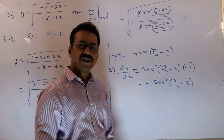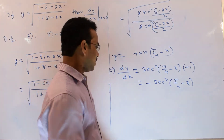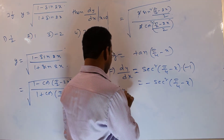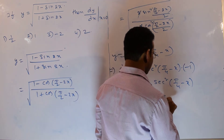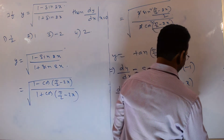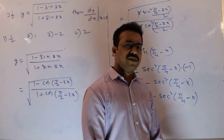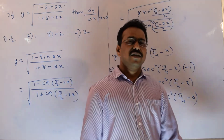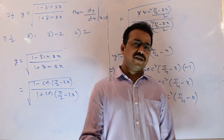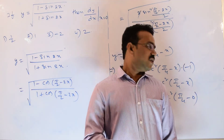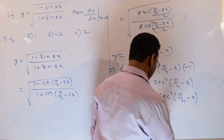We need to calculate the derivative at x equals 0 as per the given problem. Substituting x equals 0: dy/dx equals minus sec²(π/4 minus 0) equals minus sec²(π/4). Secant is the reciprocal of cos, and cos(π/4) equals 1/√2, so sec(π/4) equals √2. Therefore sec²(π/4) equals 2, giving a final answer of minus 2.